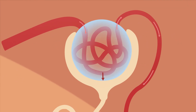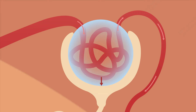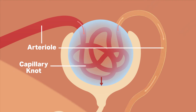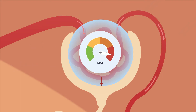Filtration of the blood happens in the nephron, but how does this work? Our renal arteries branch off to a series of small arterioles which carry our blood to a ball of capillaries called a capillary knot. The arteriole that enters the capillary knot has a larger diameter than the arteriole that leaves it. This generates high pressure within the capillary knot and facilitates the process of ultrafiltration.